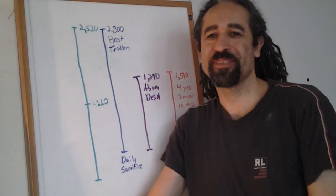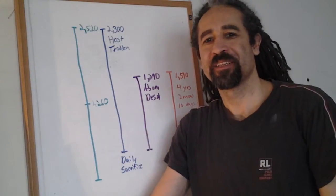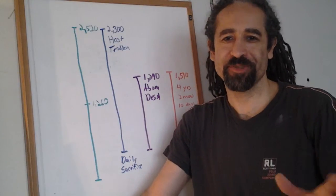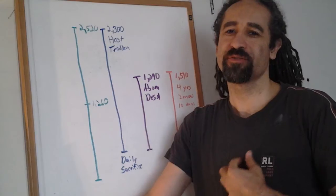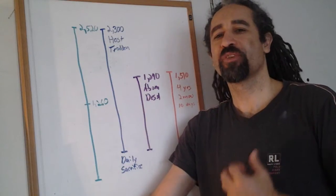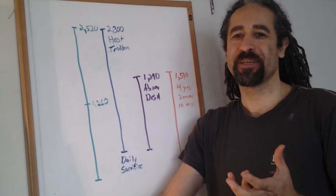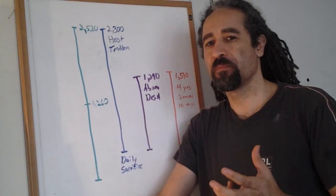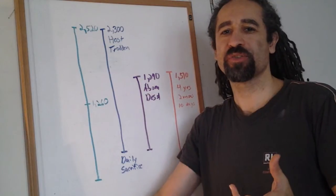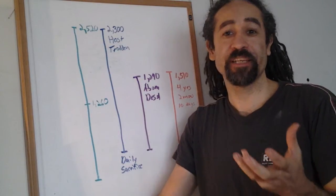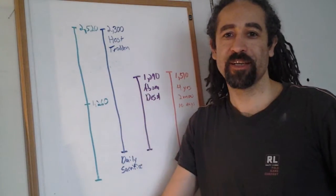So guys, we want to talk about this red heifer thing. The Temple Institute announced yesterday that they are going to raise their own red heifer. Now, this is really important and really significant, but it's important that we understand where this red heifer falls in Daniel's prophecies and Daniel's timeline.